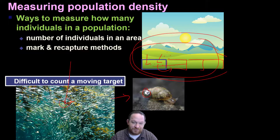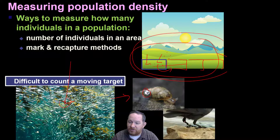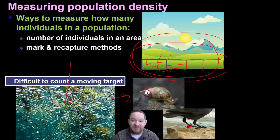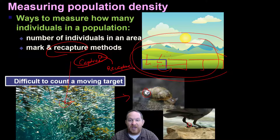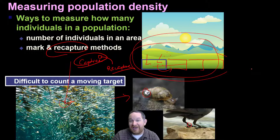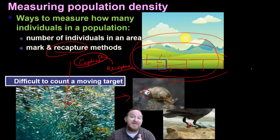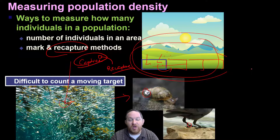Then we put them back in a certain area — the same thing we can do with birds. Then we go again, or we capture again. Some of them, though, will be recaptures. So if we capture a group, a percentage of that group will be ones that we have recaptured. Using some fancy equations from the mathematicians, we can actually estimate pretty well the total population based on the number that we recaptured when we did this mark-and-recapture method. Those are a few ways we actually go out and count and measure population density.